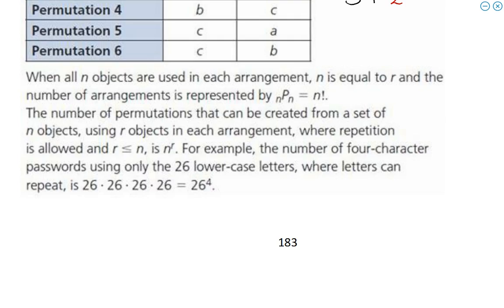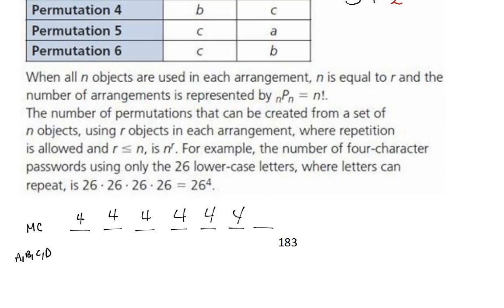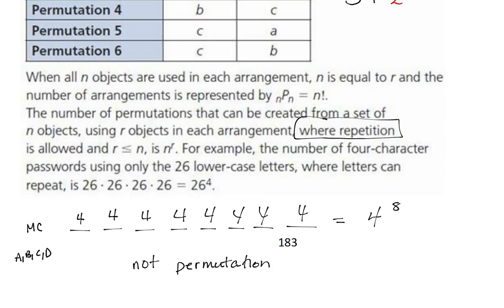Remember the multiple choice question from quiz number one — you have choices A, B, C, and D for each question. For question one you have four choices, question two still four, question three still four, and you do this eight times. It ends up being four to the power of eight. This is not a permutation because repetition is allowed.